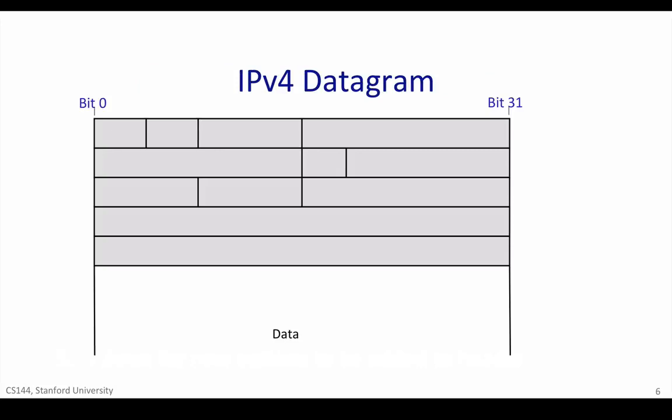I'm now going to show you the IPv4 header and explain what all the fields do. I don't need you to remember where all the fields are — I don't remember all the locations myself. But I do want you to know what each field does, because it helps you understand the scope of the IP service model. It should help cement your understanding and make it really clear that IP doesn't do a lot. It's a deliberately simple service.